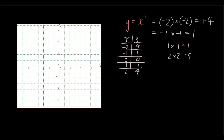Let's plot these values onto our grid. When x is negative 2, y is 4 — let's draw a little circle representing that first point. When x is negative 1, y is 1. When x is 0, y is 0. When x is 1, y is 1. When x is 2, y is 4. Now let's join them up with a smooth curve. This is our graph, and we call this particular shape a parabola. You have just drawn your first quadratic equation.